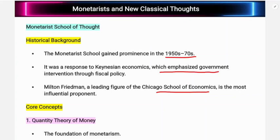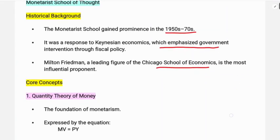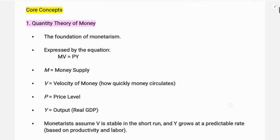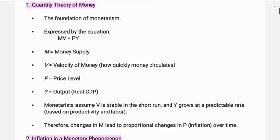Now let's look at the basic concepts and features of monetarist thought. The first is the quantity theory of money. The classicals had the quantity theory of money, and the monetarists rectified and modified it — modifying the cash balance approach and cash transactions approach. The foundation of monetarism is expressed by the equation MV = PY, where M is money supply, V is velocity of money, P is price level, and Y is output or real GDP.